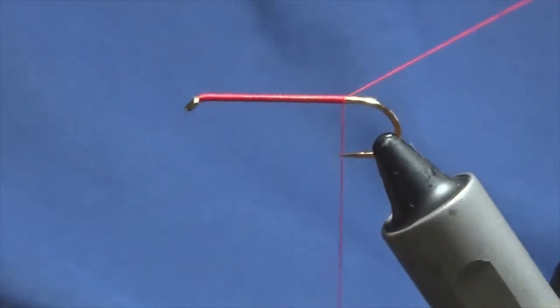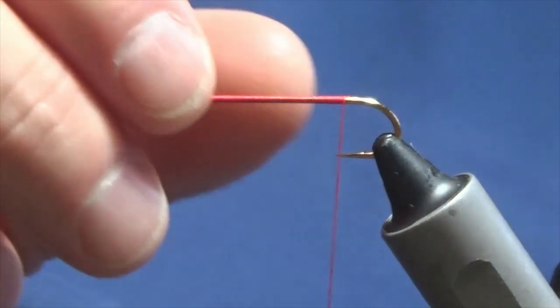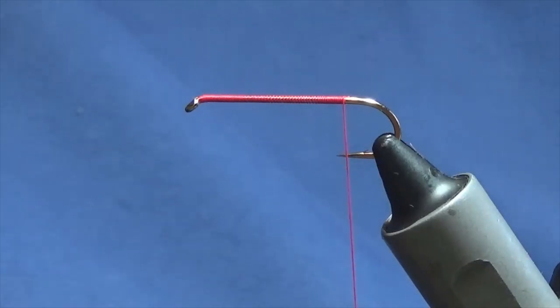I'm just using the Glo-Brite floss because it's going to give me a nice flavor when I wind up the Obamaras tinsel. Now the rib on the fly...